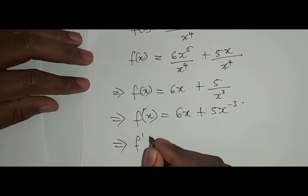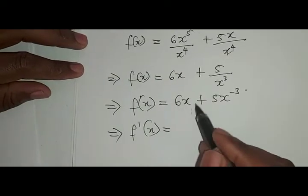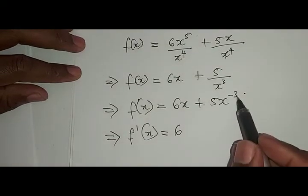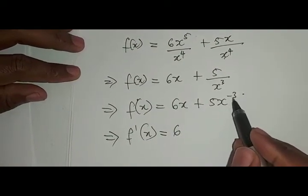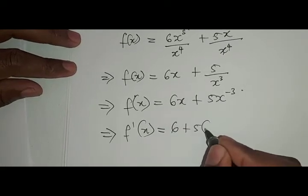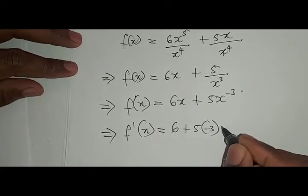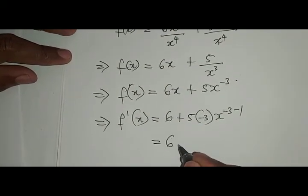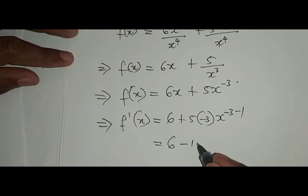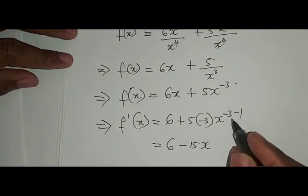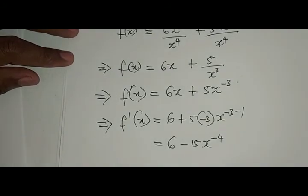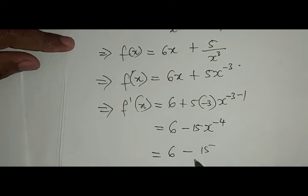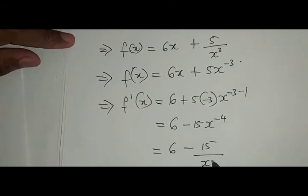Which now implies that f dash of x is equal to, differentiating 6x here we get 6, then this one, can you see that because of the minus there it will be plus 5 into minus 3x to the power minus 3 minus 1, which is equal to 6. This becomes minus 15x to the power minus 3 minus 1, which is minus 4, which is equal to 6 minus 15 over x to the power 4.